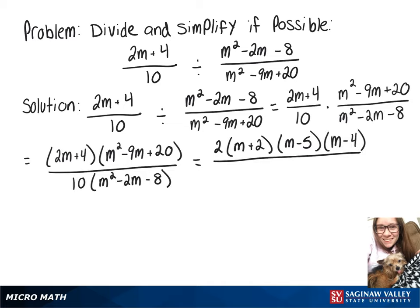On the bottom I'm going to rewrite that 10 as 2 times 5 and then we have another quadratic and that will factor into m minus 4 times m plus 2.